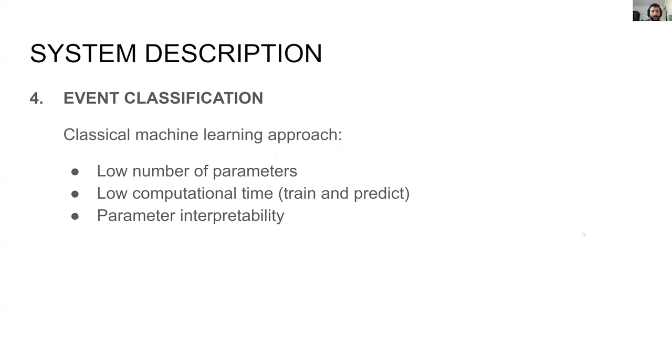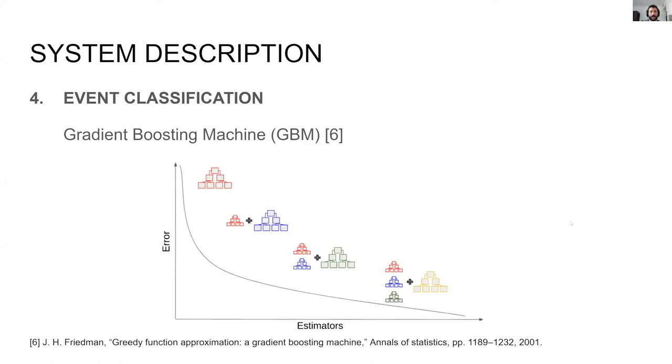Regarding the classifier, we have opted for a classical machine learning approach. The main advantages for such approach are the low complexity requirements needed, which also speed the algorithm iterative development time. As a side consequence, the importance of the parameters is available, which might help to make the whole process more understandable. This motivates the election of gradient boosting machine as the classification method.